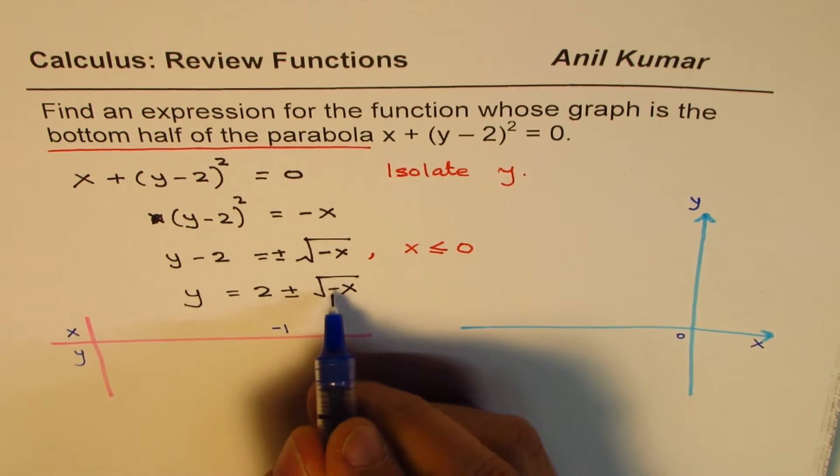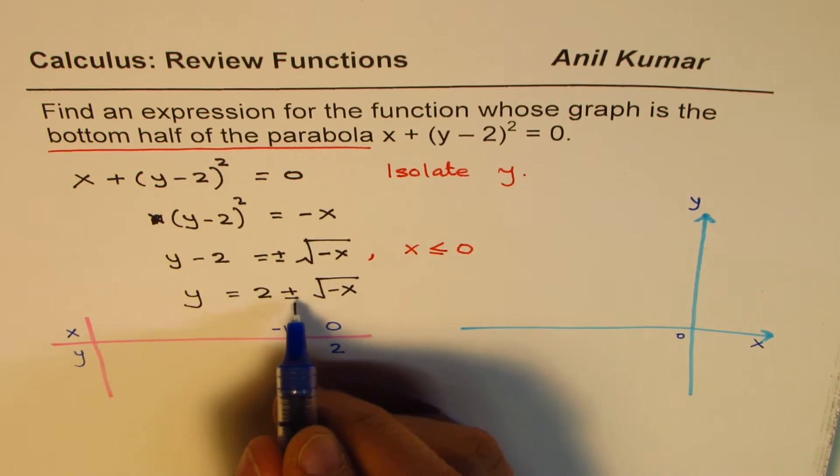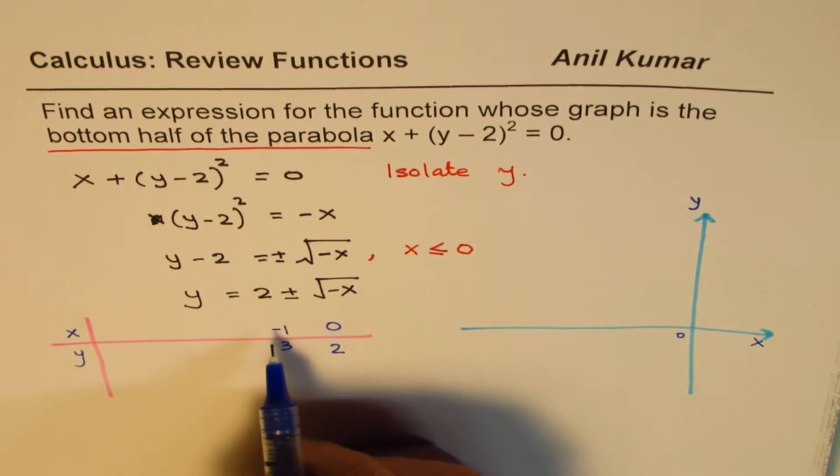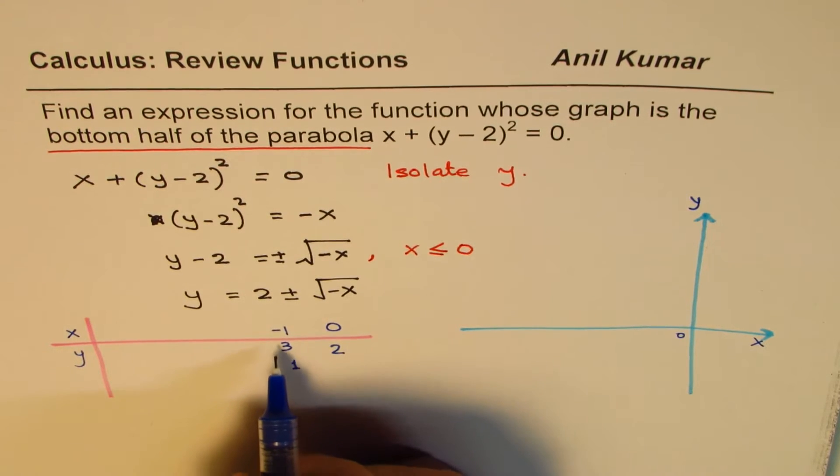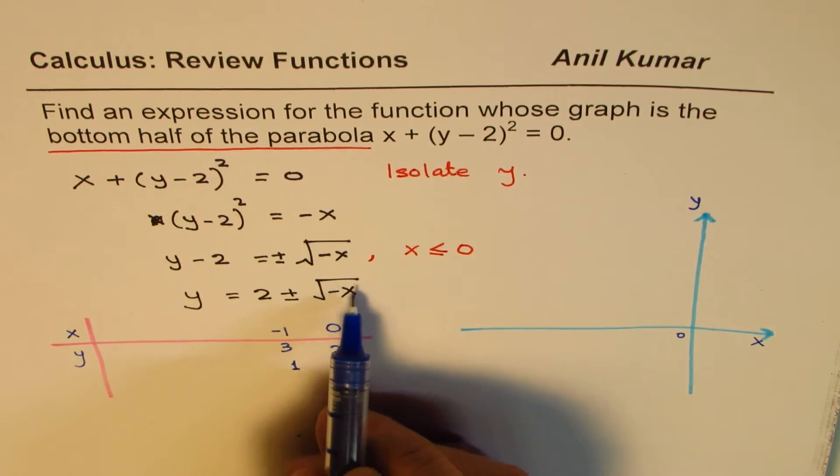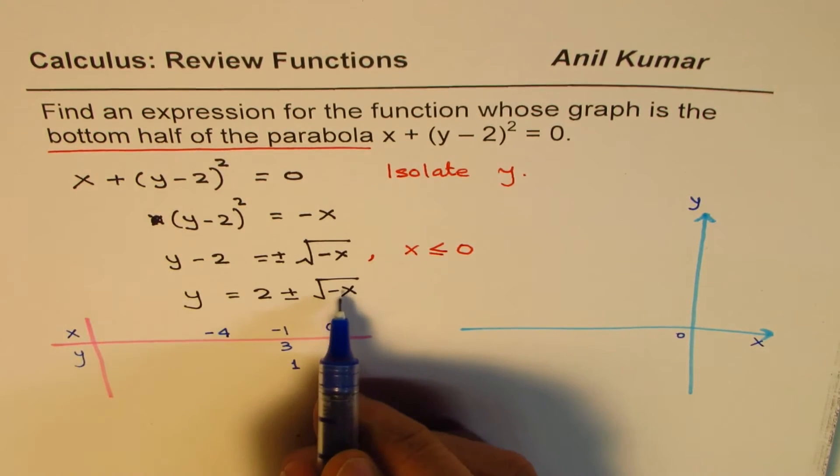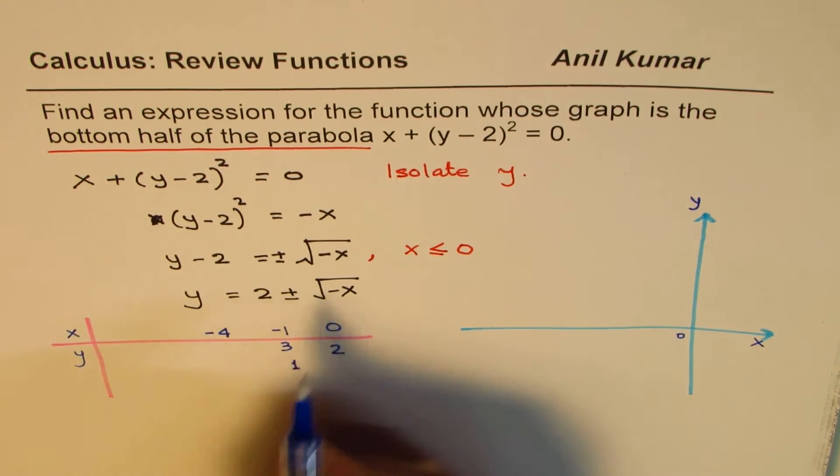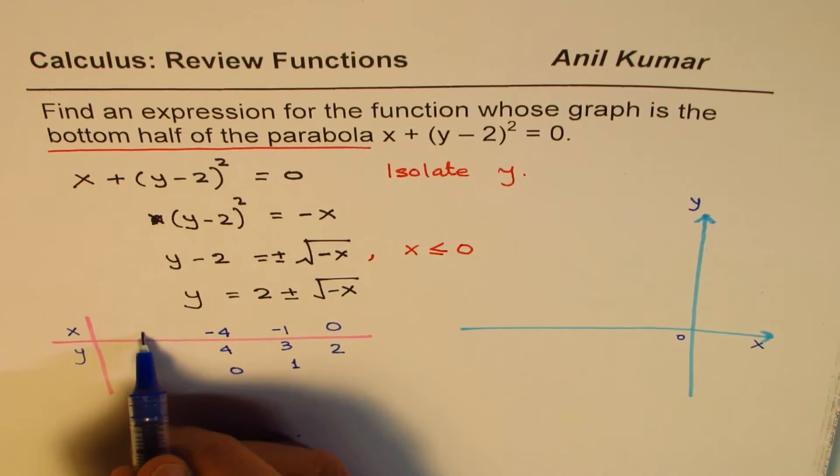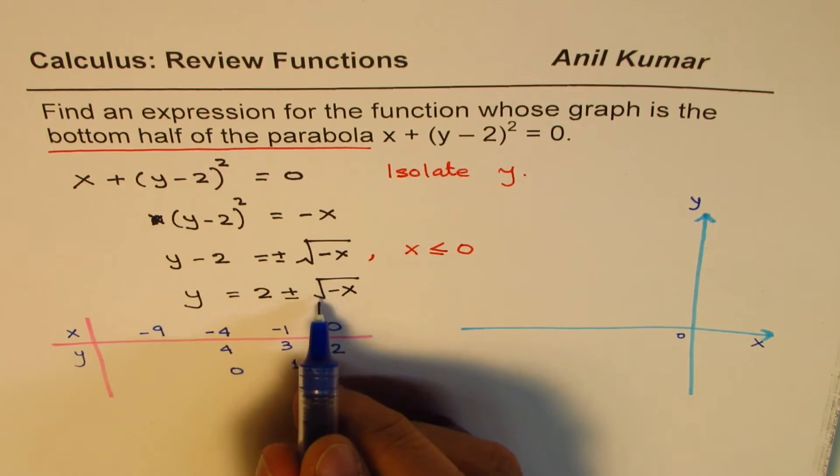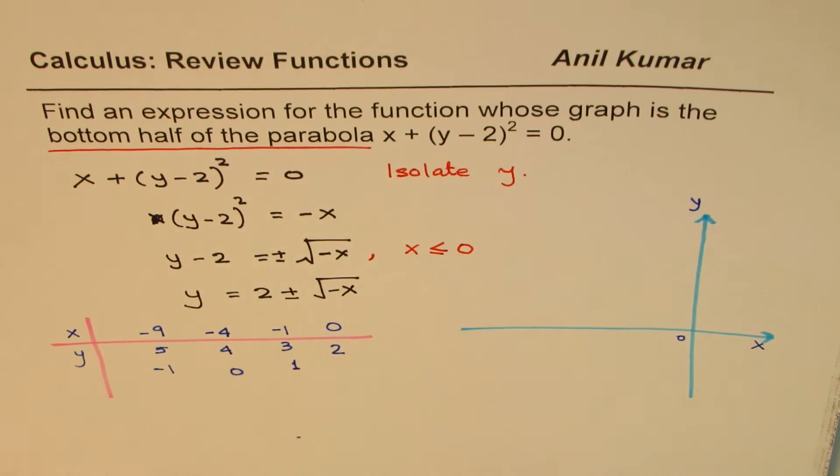At x = -1, we get -(-1) = +1, so square root is 1. We get two values: 2 + 1 = 3 and 2 - 1 = 1. At x = -4, square root of 4 is 2, giving us 2 ± 2, which gives 4 and 0. At x = -9, square root is 3, so 2 + 3 = 5 and 2 - 3 = -1. So we get these values representing the function in table form.